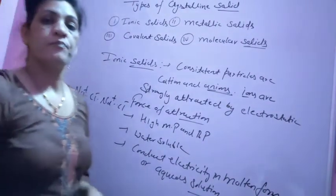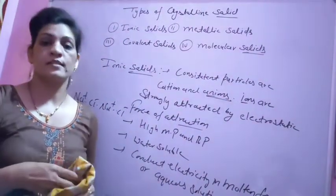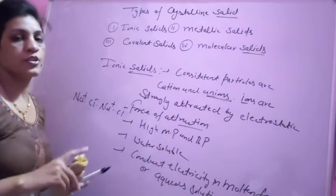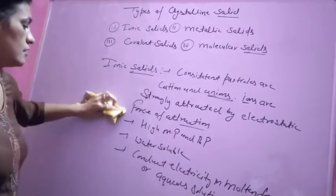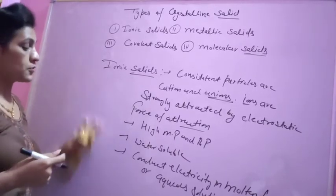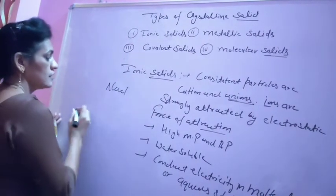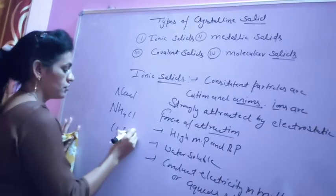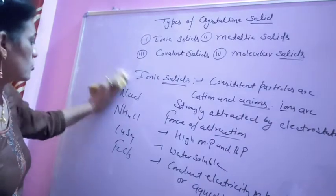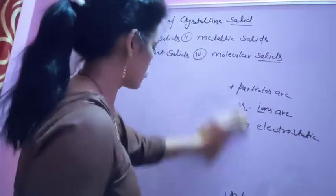Ionic compounds exist in solid form at room temperature due to the strong electrostatic force of attraction. In the liquid state they would be free. All ionic compounds exist in solid form — that is the cause of the strong electrostatic force of attraction making them hard with high melting and boiling points. After that, the other type of solid is metallic solids. Metals are metallic solids.